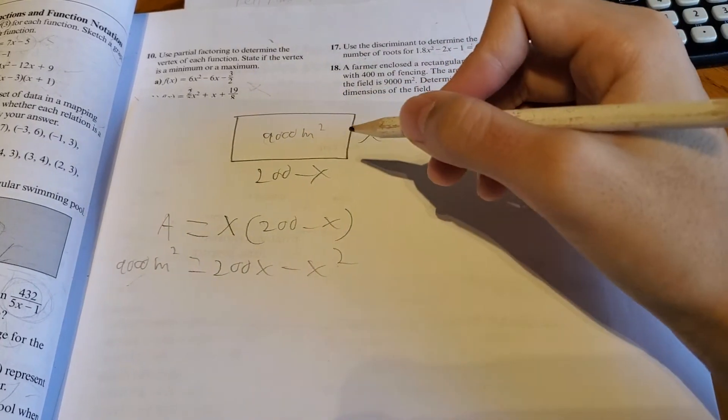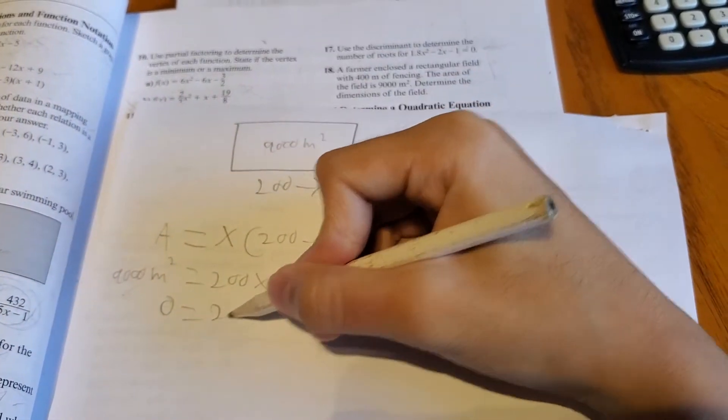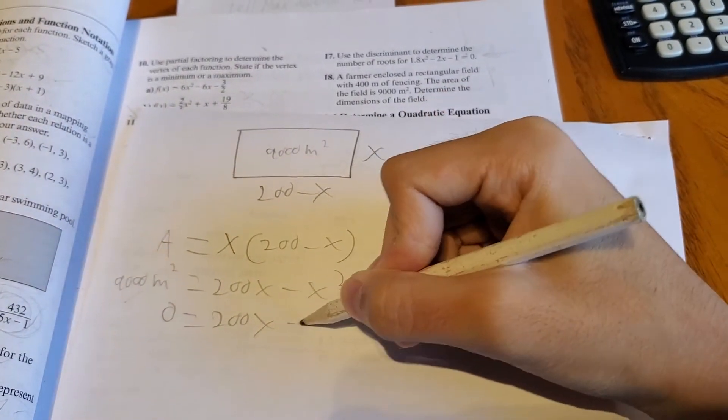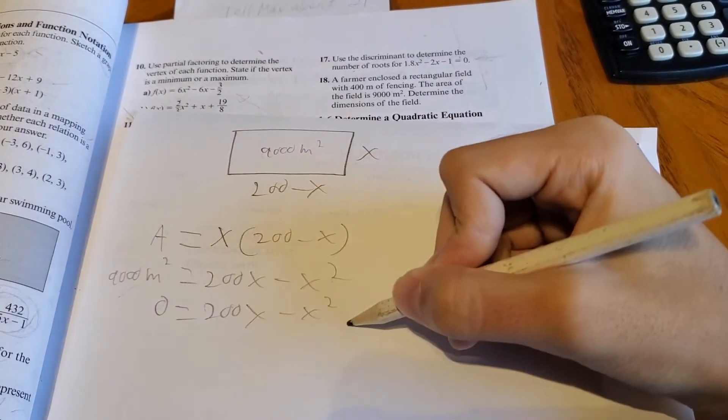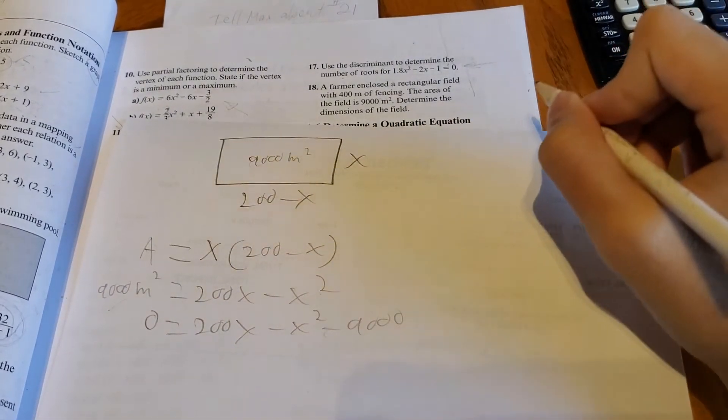So now let's bring everything to one side. 0 equals 200x minus x squared minus 9,000. We don't really need to write down the units.